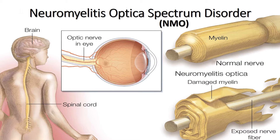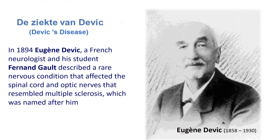Now known in broader terms as Neuromyelitis Optica Spectrum Disorder. In 1894, Eugene Devic, a French neurologist, and his student Fernand Gault described a rare nervous condition that affected the spinal cord and optic nerves, resembling multiple sclerosis, which was named after him.